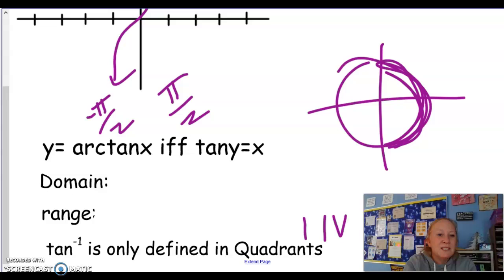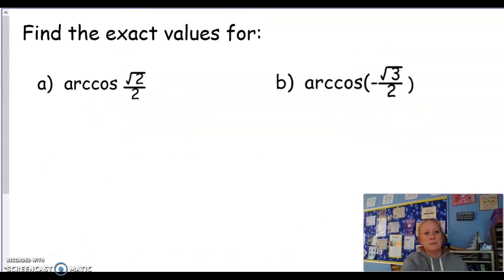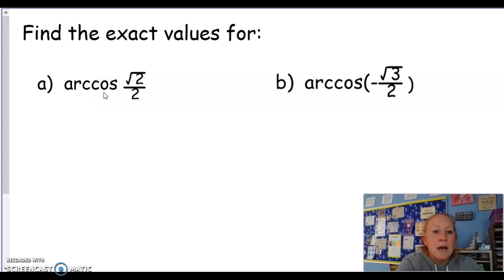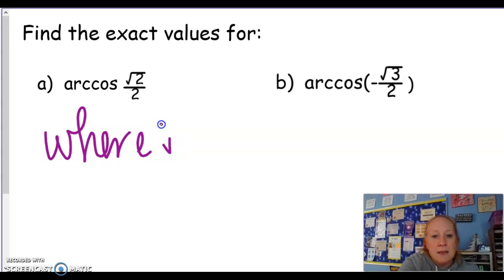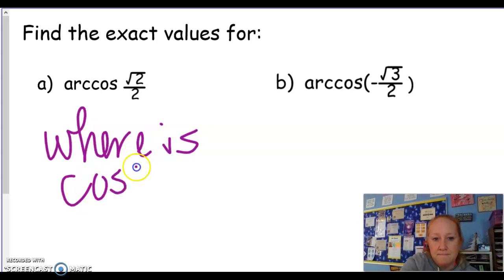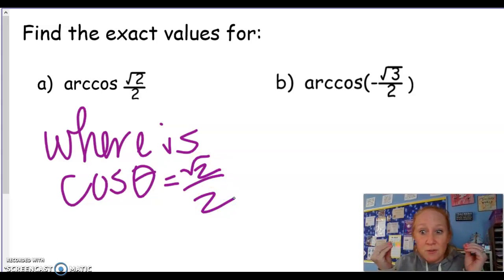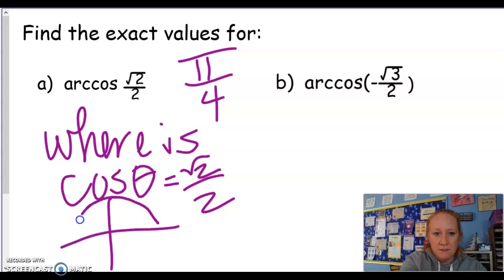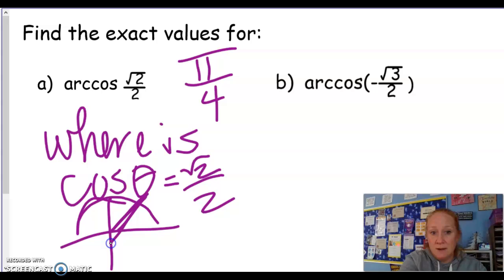We're not going to deal with the graph as much as can you work backwards. This says arc cosine, so that's asking you, where is cosine θ equivalent to √2/2? √2/2 are at π/4s. Well, which π/4? It's got to be positive. So if it's in here somewhere, it's got to be that one, which is positive π/4.